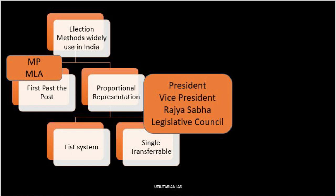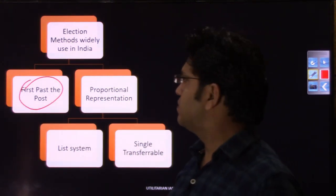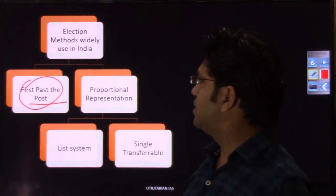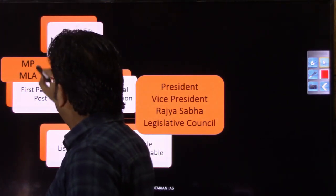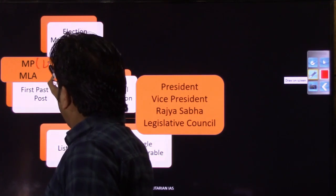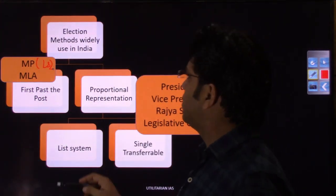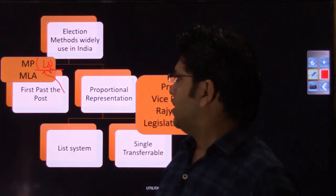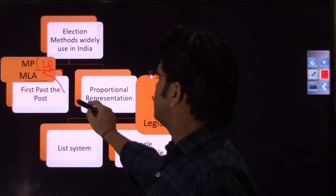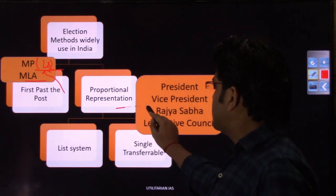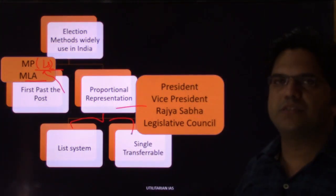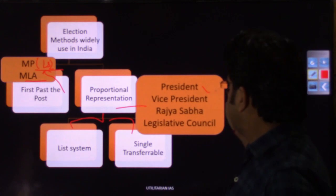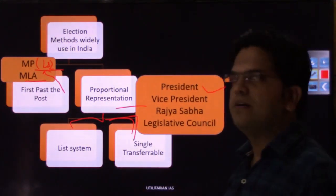In India, we have two kinds of election methods. For general elections — that is, Members of Parliament from Lok Sabha — and for assembly elections, we have adopted the First Past the Post system. For Rajya Sabha members, it is different. For the member of parliament belonging to Lok Sabha and for electing MLAs, we use First Past the Post. While we have something called proportional representation, which has two types: the list system and the single transferable vote system. What we have adopted for president, vice president, Rajya Sabha, and legislative councils is proportional representation through single transferable vote.